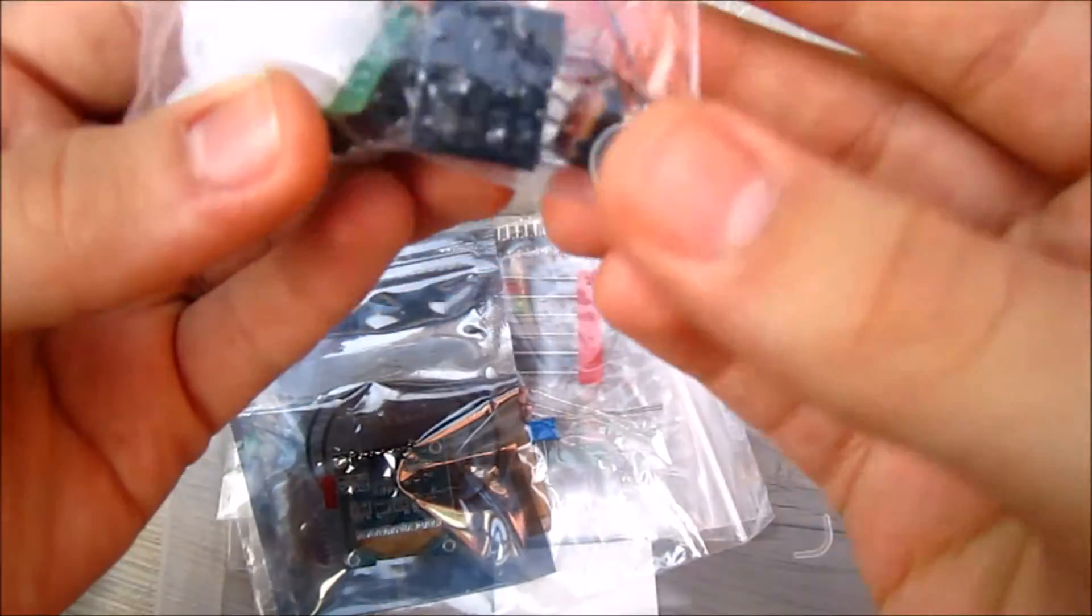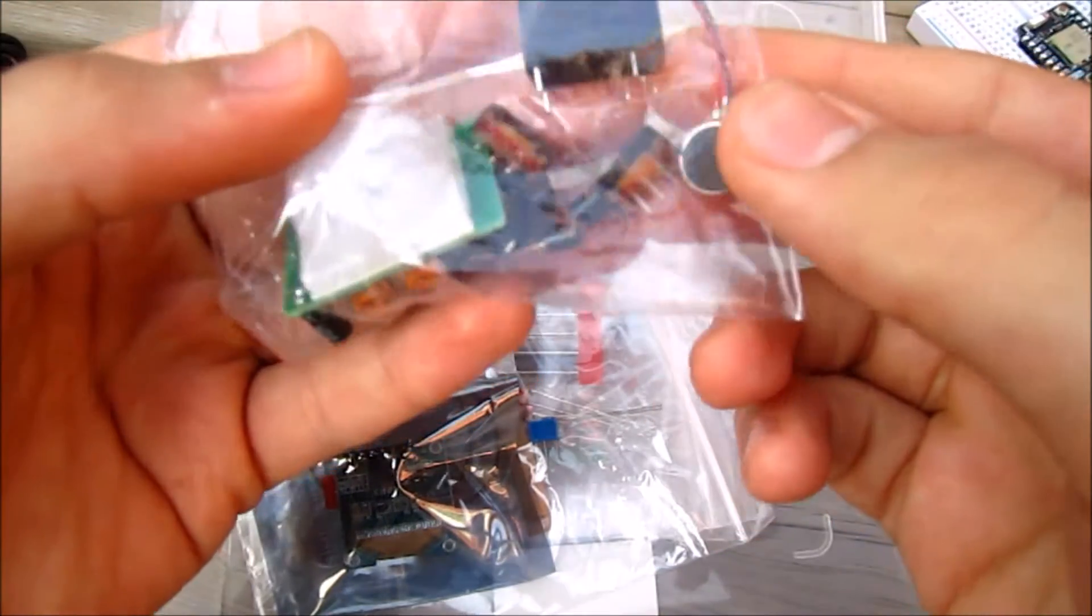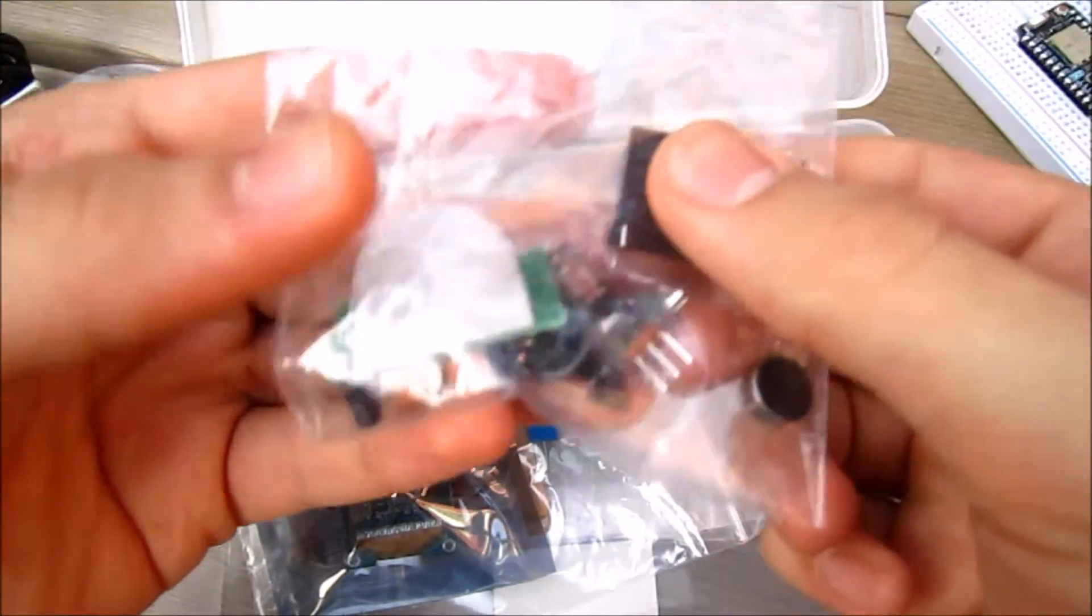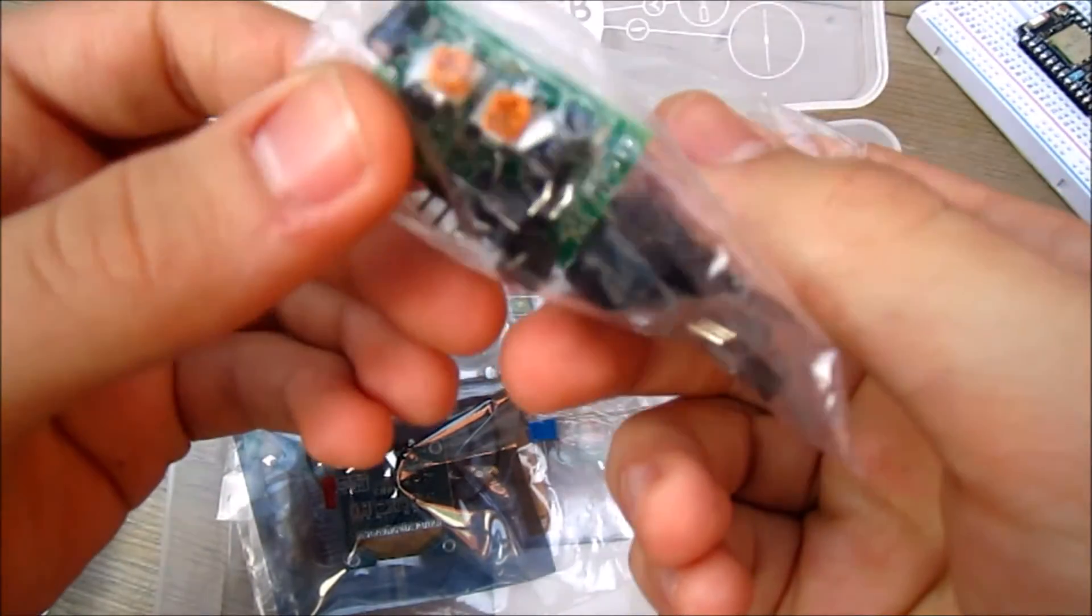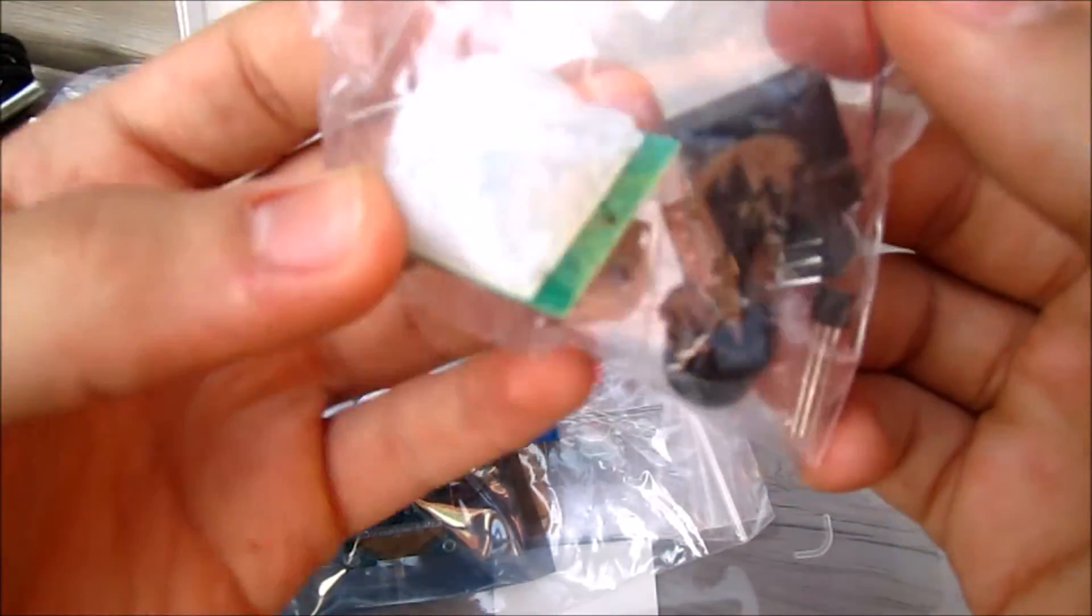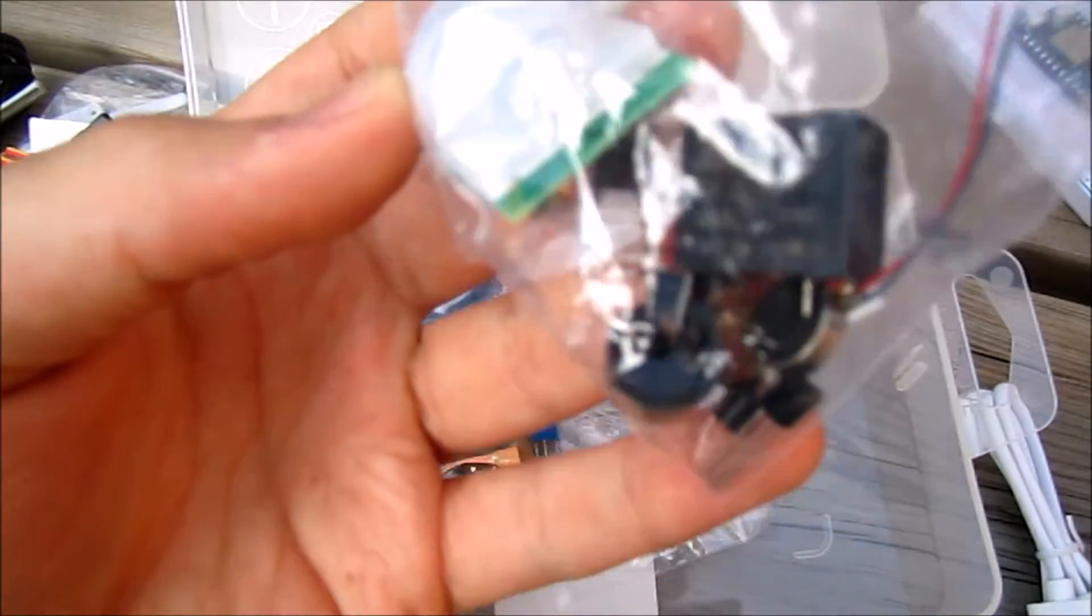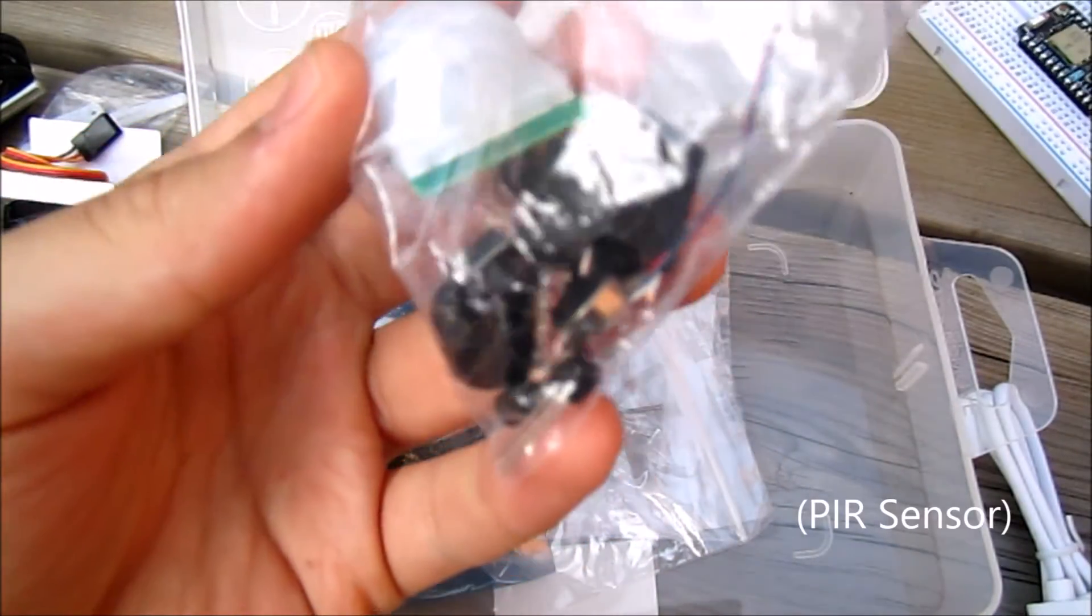In this little bag we have a bunch of things, one of which is a vibration motor. There's a couple of temperature sensors and a couple of capacitors in here. There's also this—I'm not actually sure what this is. I think it's like a light bulb or something.